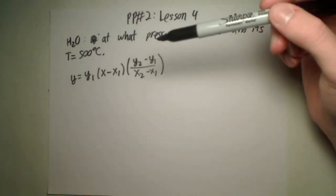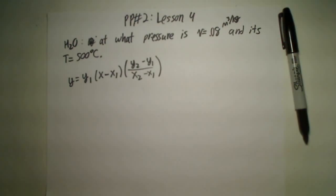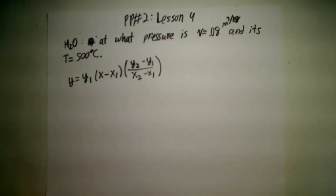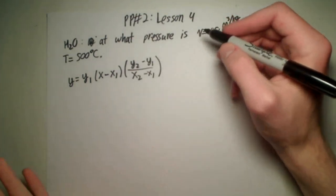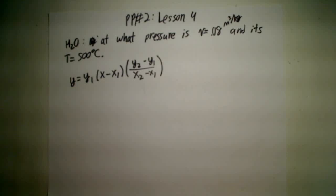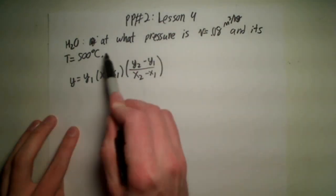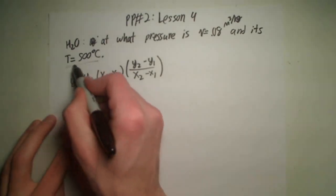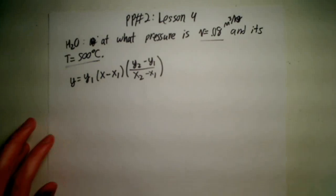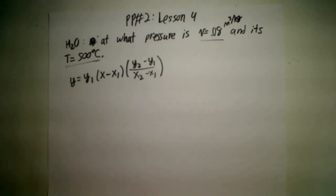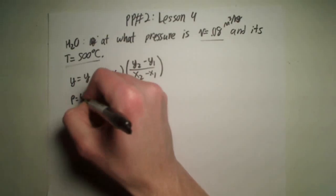And not only that, but if you look for it in the saturated tables, you're going to be hard pressed to find a temperature so high. So it's a superheated vapor, and we're going to be looking at two different pressure tables because we're going to have to interpolate between those two tables. We're going to look for which tables where the entry for temperature at 500 degrees Celsius is close to 0.08.